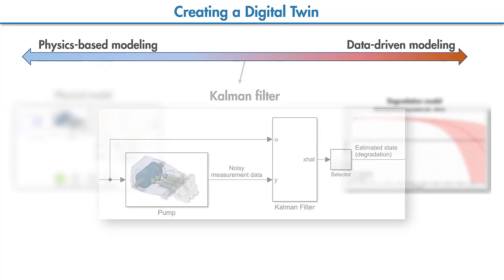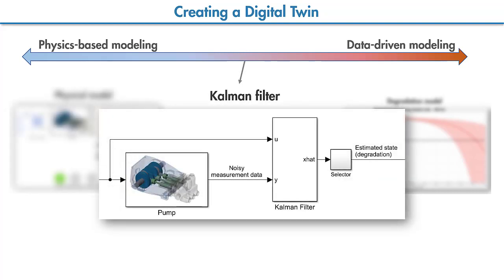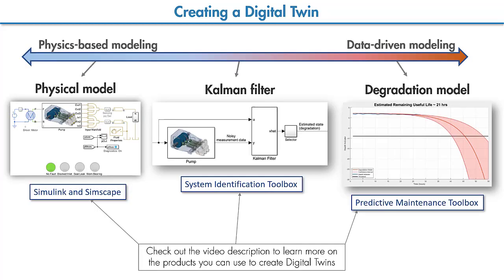Similarly, a Kalman filter can also be used as a digital twin, which can model the degradation of the pump as a state and periodically update that state to represent the current condition of the pump. These are some examples of how a digital twin can be created. Based on the intended use, the digital twin can also be a combination of these models.